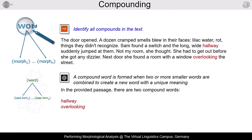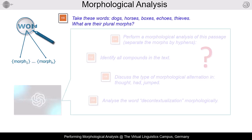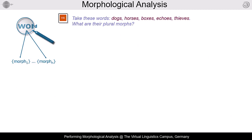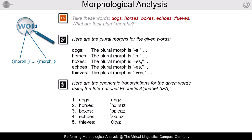Should we therefore leave all aspects of morphological analysis to systems such as ChatGPT? No. Take the analysis of the plural morphs in these five words. An analysis based on orthography alone misses important generalizations. We have to incorporate the phonemic structure of the respective items.